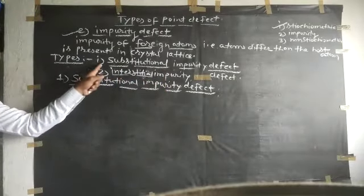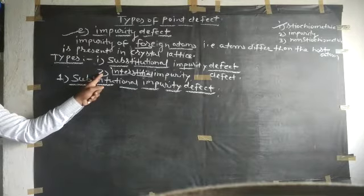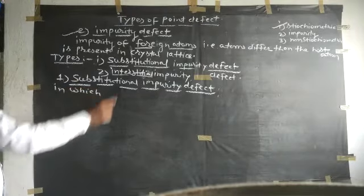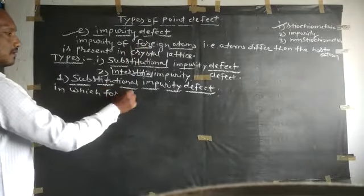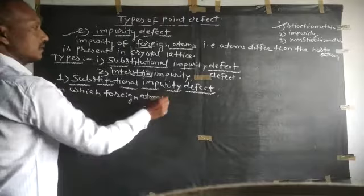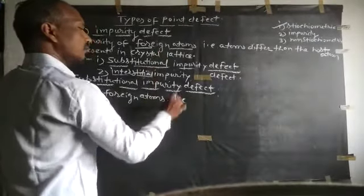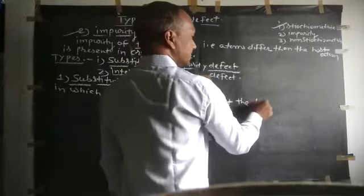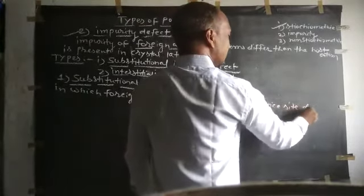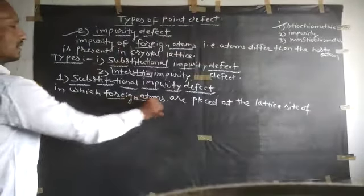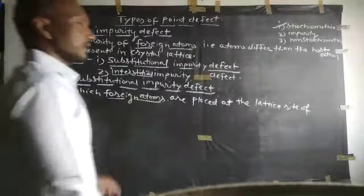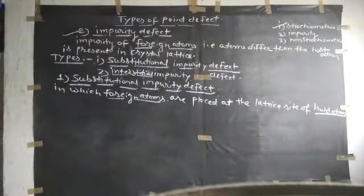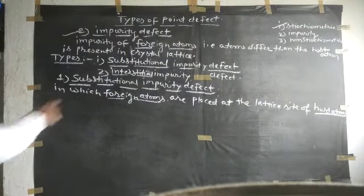In the substitutional impurity defect, the foreign items are placed at the lattice site of the host items. The foreign item is placed at the lattice site of the host item. That is called the substitutional impurity defect.